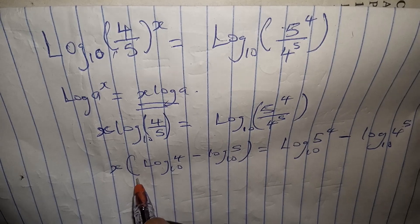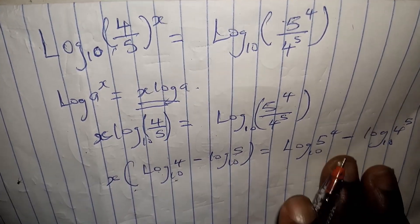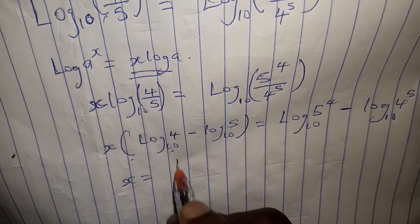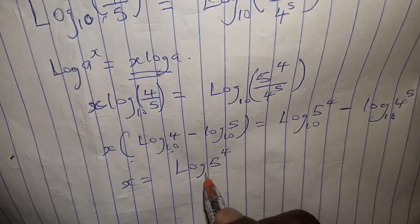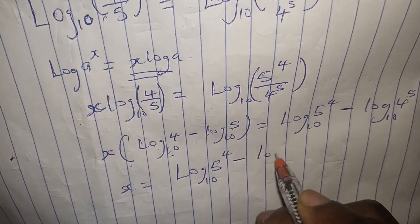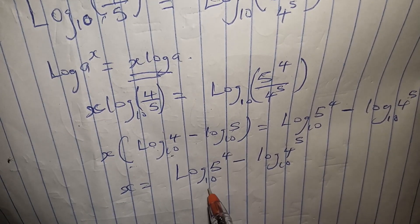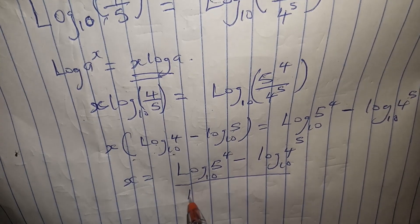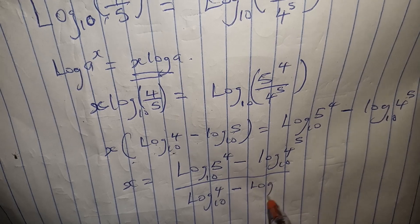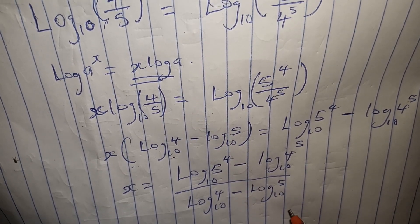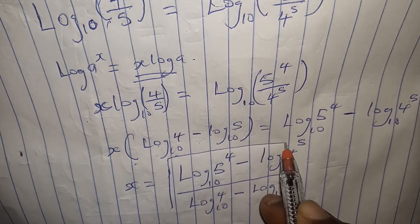To find x, we divide both sides by (log of 4 base 10 minus log of 5 base 10). Therefore x equals (log of 5 to the power of 4 base 10 minus log of 4 to the power of 5 base 10) all divided by (log 4 base 10 minus log 5 base 10). This is the final answer for x, and if you push this into your calculator the numerical value will come out.